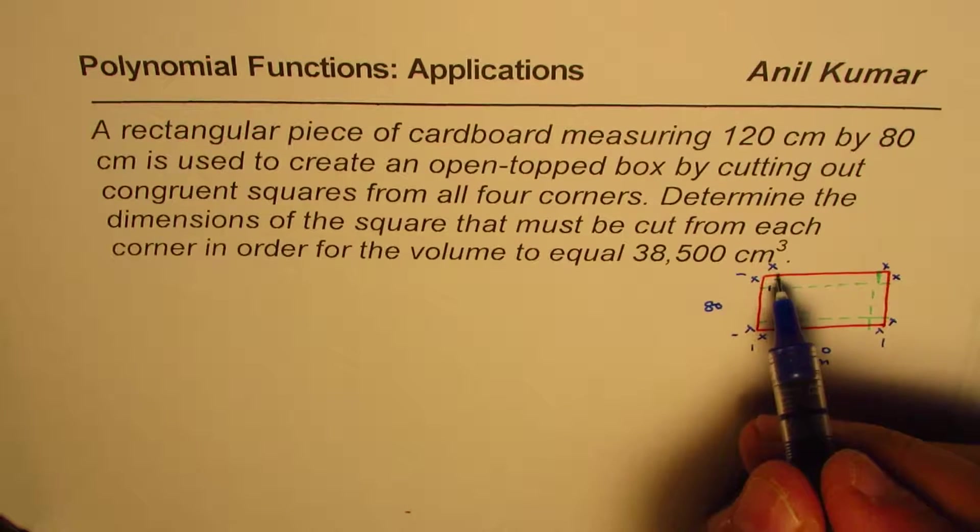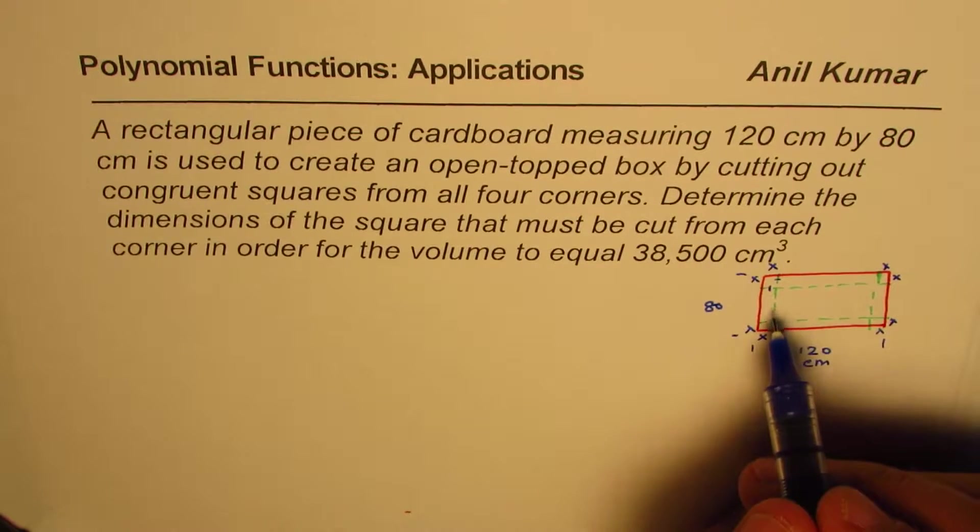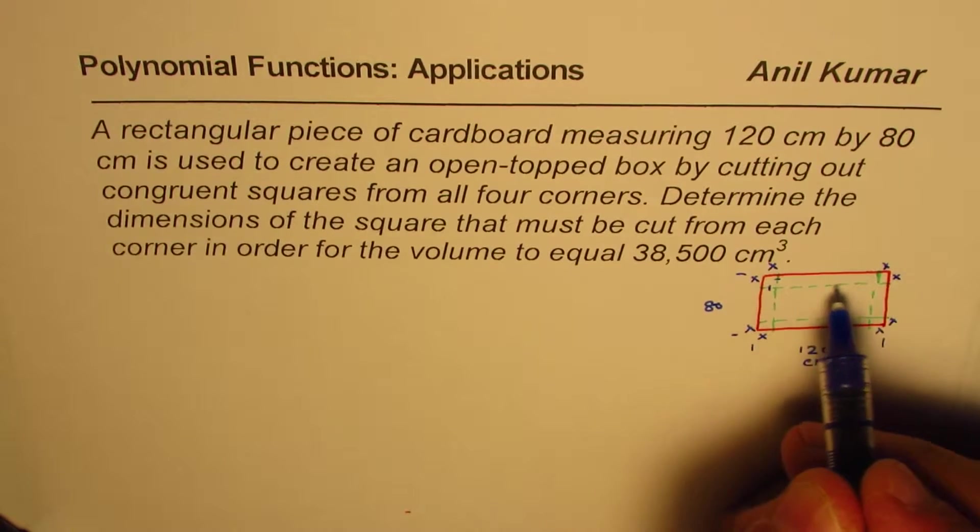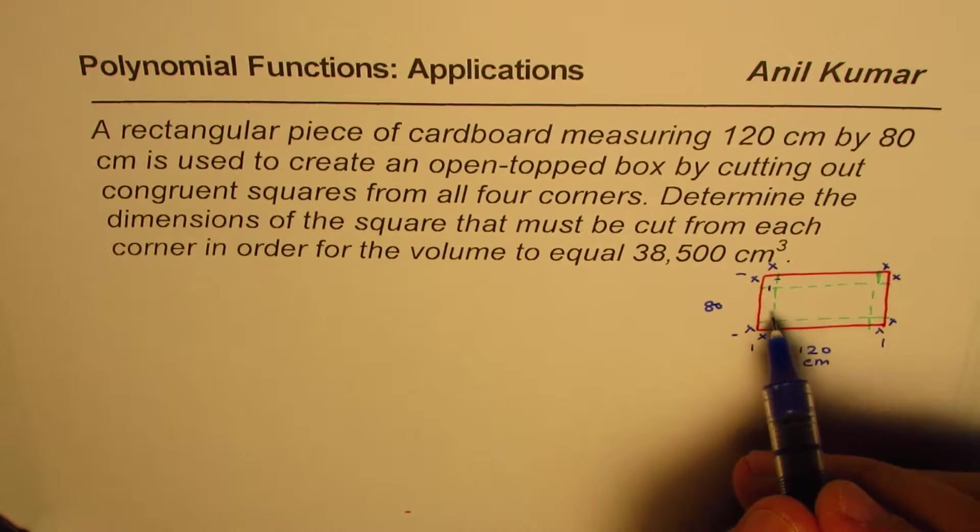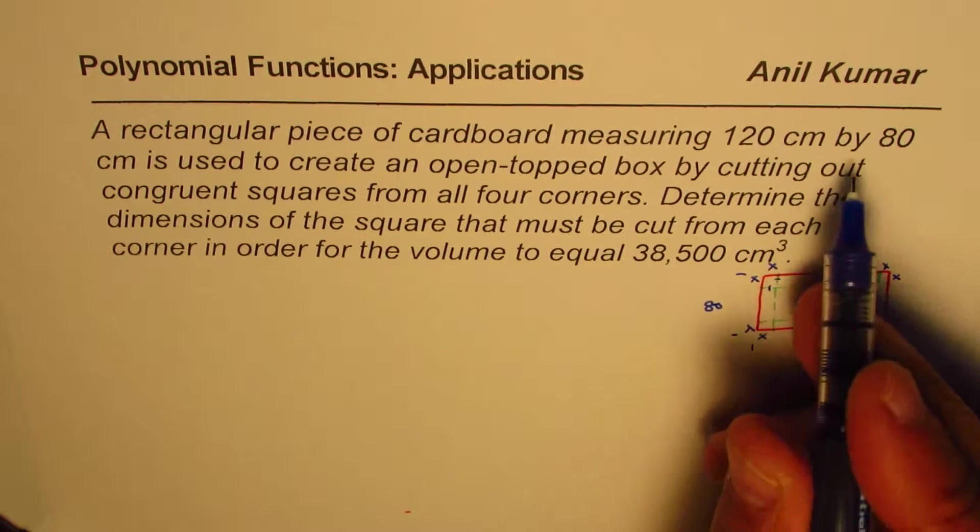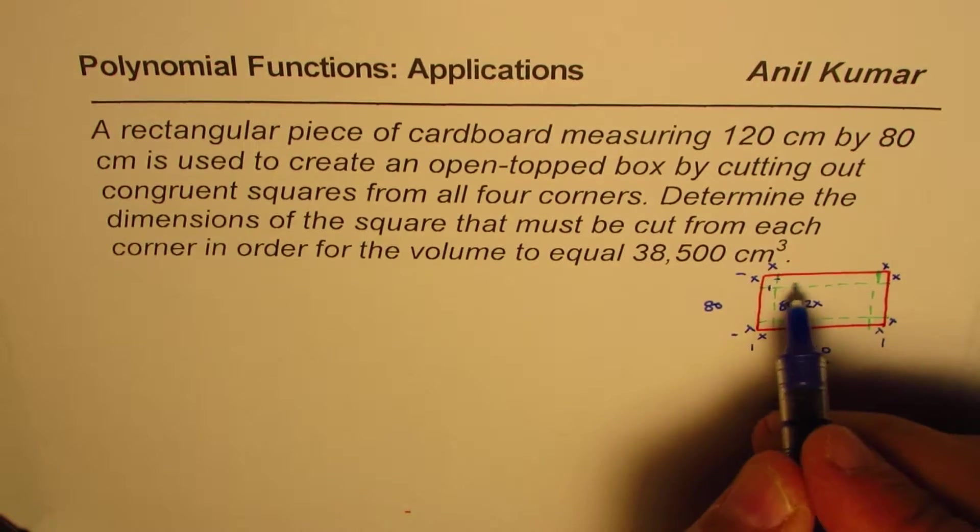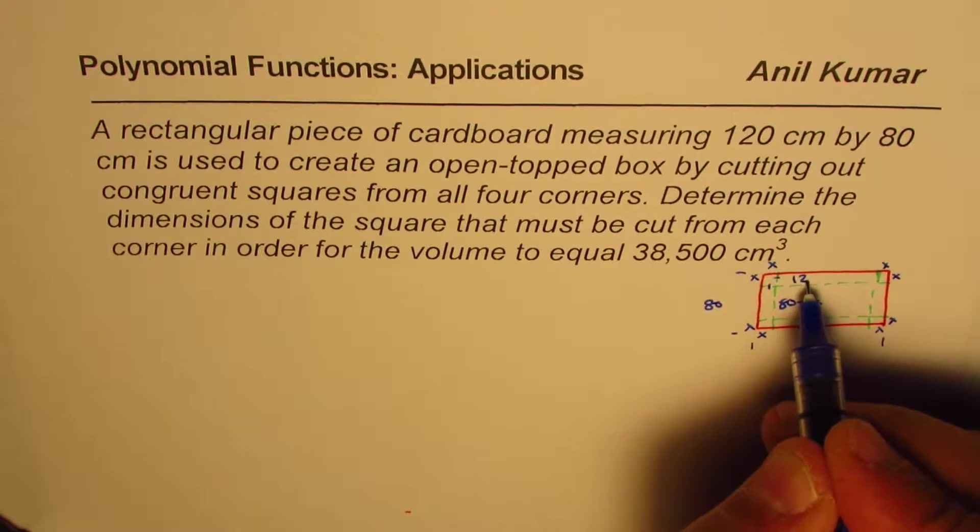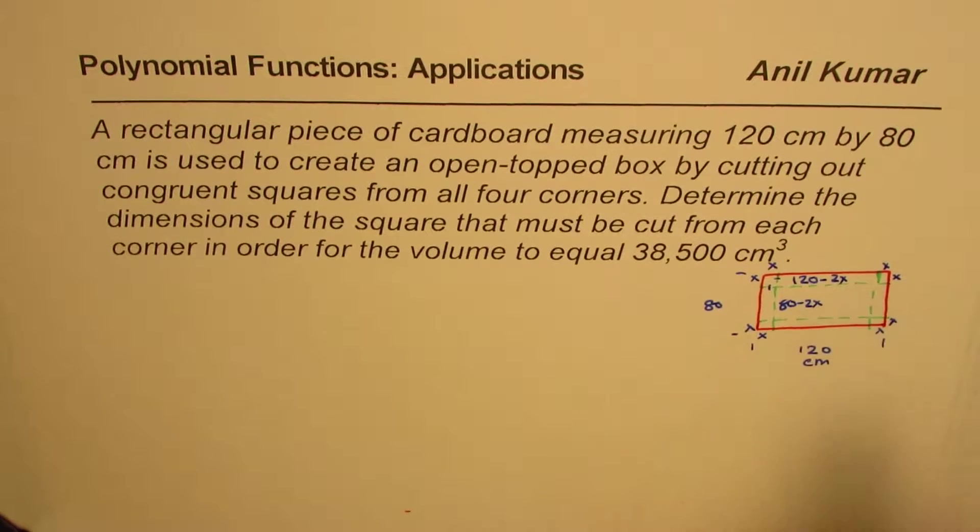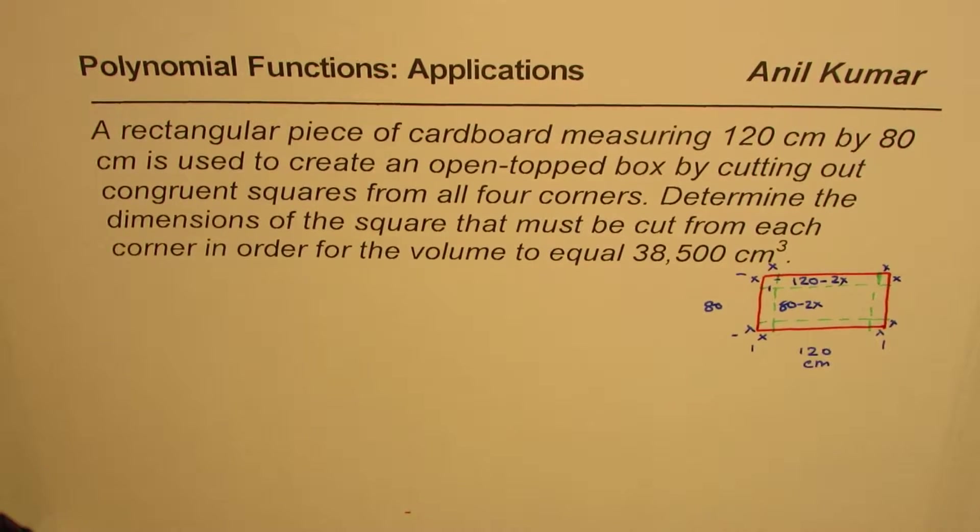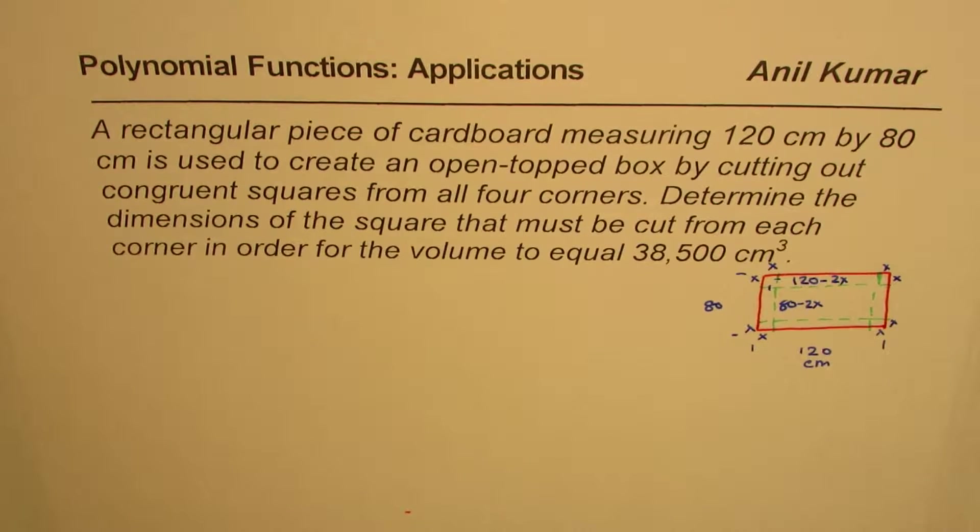If you remove X and X from each side, then for the box, the base will have width of 80 minus 2X. And the length will be 120 minus 2X. So that is what we'll get as a box.